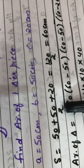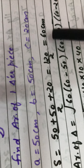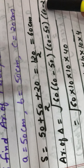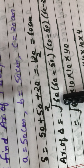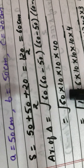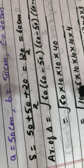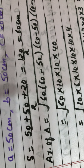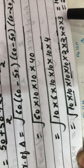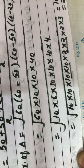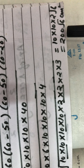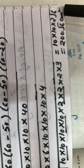a = 50 cm, b = 50 cm, c = 20 cm. S = (50 + 50 + 20)/2 = 60 cm. Using Heron's formula, area = √(S(S−a)(S−b)(S−c)) = √(60 × 10 × 10 × 40). Making factors of these numbers, we get two pairs of 10, one pair of 2, and 2 × 3 = √6, giving us 200√6 cm².